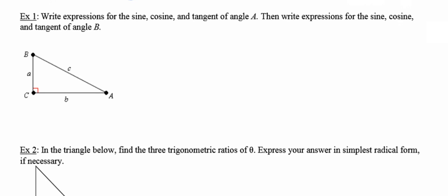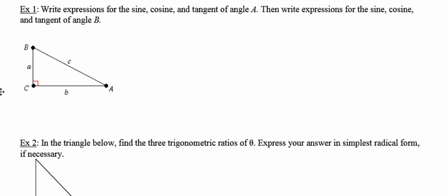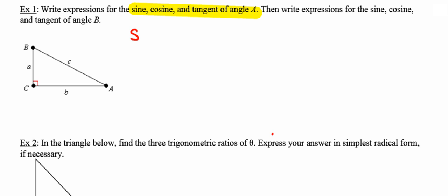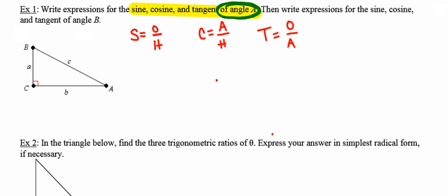In example one, they're asking us to write expressions for the sine, cosine, and tangent values of angle A, then do the same thing for angle B. I'm going to focus first on angle A. Going back to SOHCAHTOA, sine is the relationship between the opposite side and the hypotenuse, cosine is the ratio between the adjacent side and the hypotenuse, and tangent is the opposite side over the adjacent side — all relative to angle A.